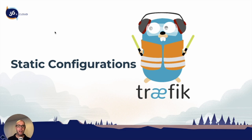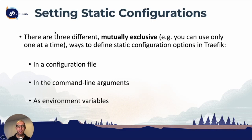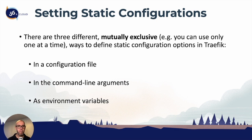The first thing we need to understand is setting the static configuration. There are three different options available: we can either use a configuration file, a command line argument, or an environment variable. What's important to understand is that they're mutually exclusive — we can only choose one way to set the static configuration. For example, if we choose the configuration file, we can only use the configuration file and not the other two options.